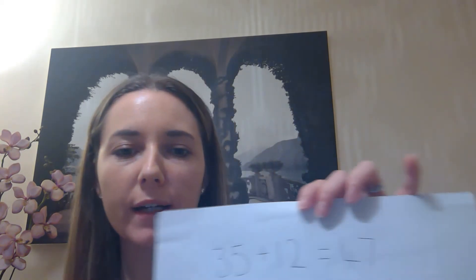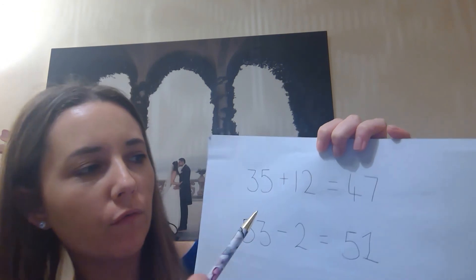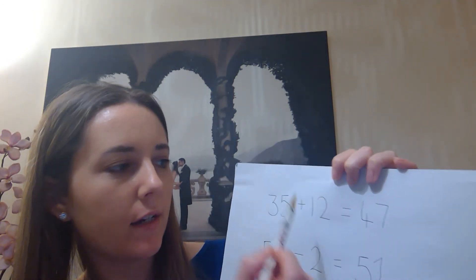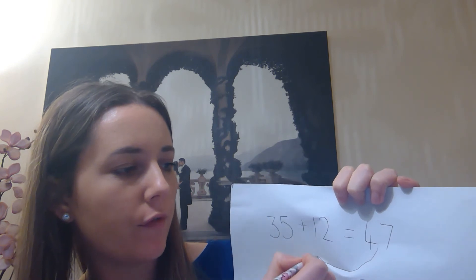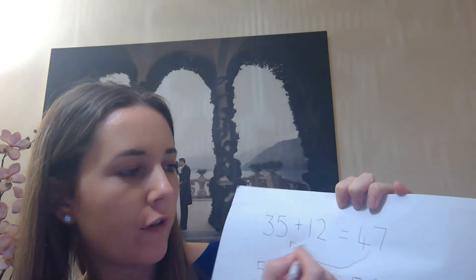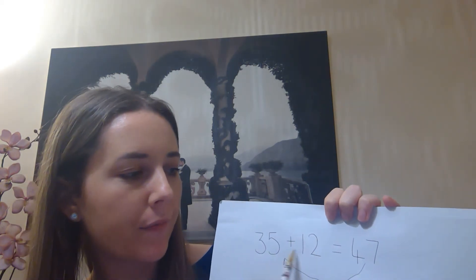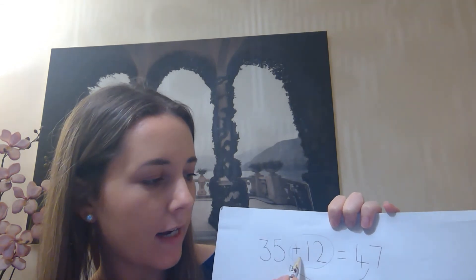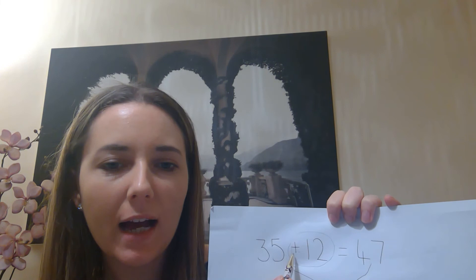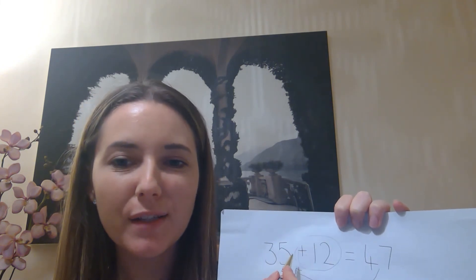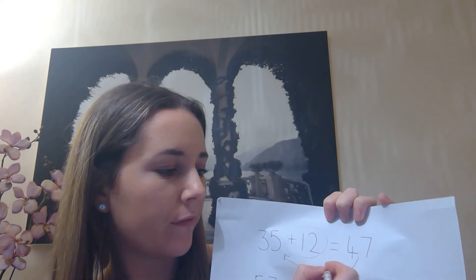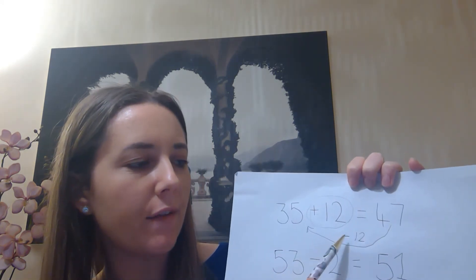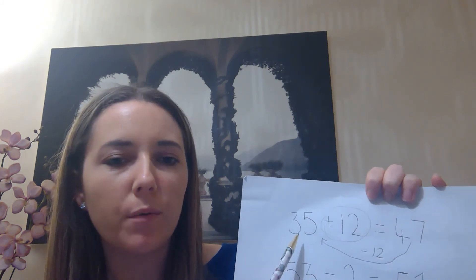So that is how you can use the inverse to check your calculations. When you are working out how to use the inverse, remember to think and start here and draw your arrow from 47 to 35 from the answer to the first number. Then look at the operation and change it into the opposite. So instead of adding 12, we are going to subtract 12. So it will be 47 subtract 12 should equal 35.